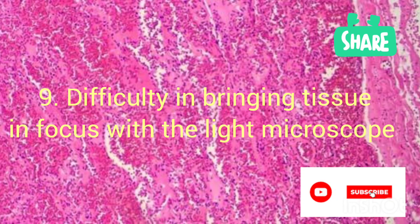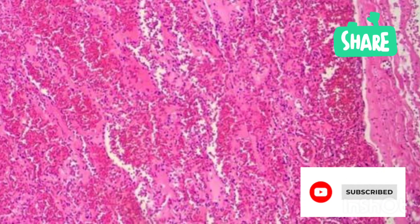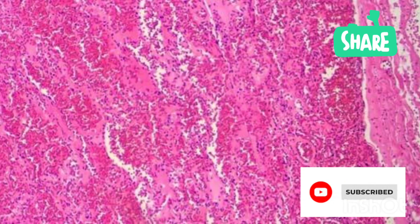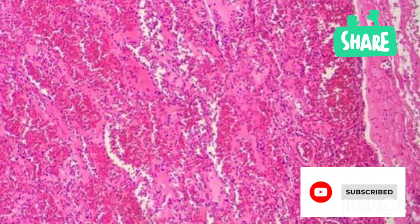Another problem is when you have difficulty bringing some of your tissue into focus with the light microscope. After staining, when you can't bring the tissue into focus, the cause could be that the mounting medium is on top of the coverslip. Sometimes when you mount manually, excess mounting medium drops on top of the coverslip, making it difficult to focus. The solution is to remove the coverslip and remount with a clean coverslip, and review the mounting method to prevent recurrence.